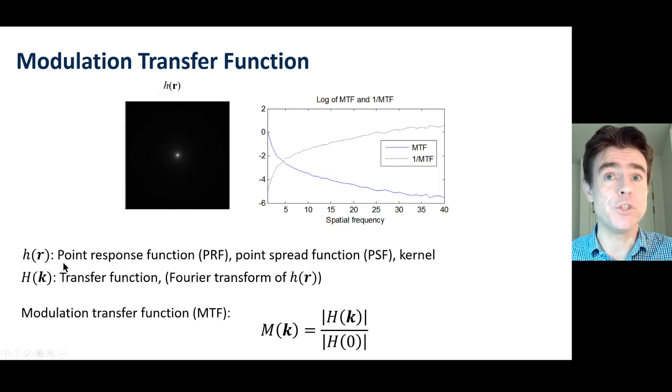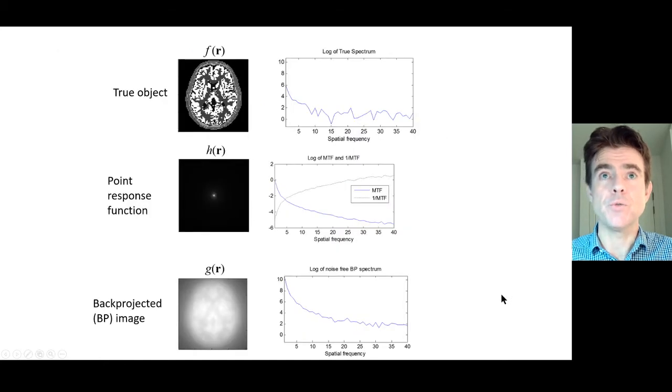Just pointing out, this is the point spread function, H of R. H of K is the Fourier transform of that, which we've been calling the transfer function. Here I'm just representing that transfer function by this normalized version, the modulation transfer function. As we know, we've got the true object convolved with a point spread function gives the back projected image. If we look in the Fourier domain, here's that decaying spectrum, that characteristic decay of more or less any object for medical imaging. It gets multiplied by the transfer function, and therefore the output spectrum of the output back projected image is similarly decaying.